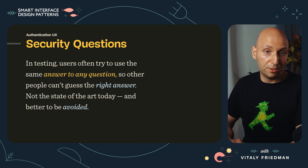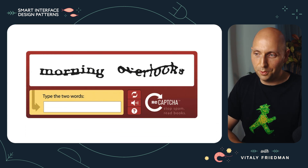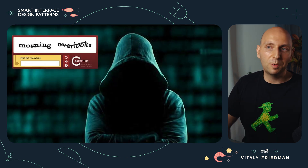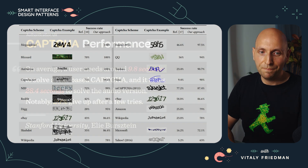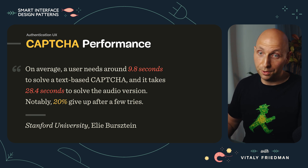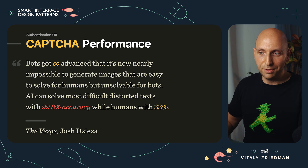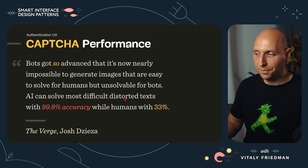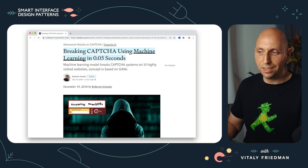Security questions are definitely not state of the art today and should be avoided. Not to mention CAPTCHAs — which I always see a little bit differently, maybe more like a frustrating puzzle. When we look at the research on CAPTCHAs, performance is just horrendous. On average, a user needs around 10 seconds to solve a text-based CAPTCHA and 28.4 seconds to solve the audio version. Notably, around 20% give up after a few tries. What's also really interesting is that bots have become so advanced that it's nearly impossible to generate images that are easy for humans but unsolvable for bots. AI can solve the most difficult distorted text with almost 100% accuracy, while humans only manage 33% — there's a great study about this from 2018.